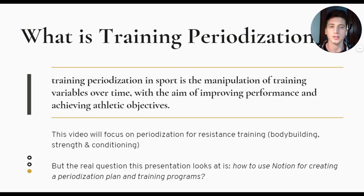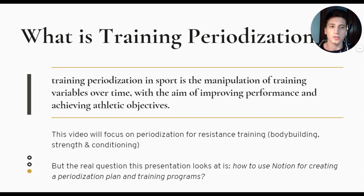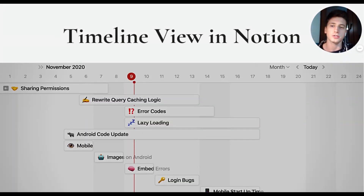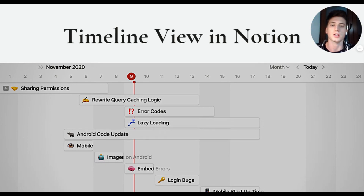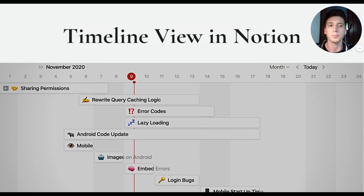Again, this is not the focus of this video. The focus is on how to possibly use Notion and the Timeline view to create training programs that stretch over time in a periodization fashion. So let's look at that — this is what the Timeline view in Notion looks like. This screenshot shows some cards, and each card is a page. You can manipulate and change the duration of each page based on what you'd like it to last for, which makes it a perfect feature for creating training programs. Now we'll dive into Notion and see how to practically use the Timeline view for creating periodization plans.